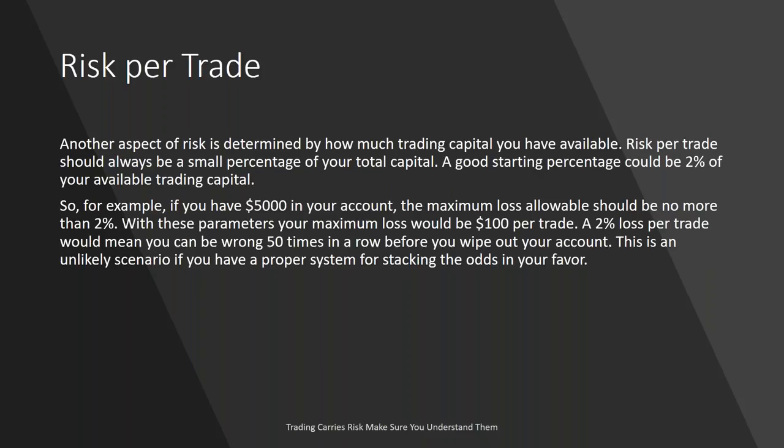There's a whole slew of order entry types — OCOs, one cancels the other. That means if you're not sure if an asset is going to go up or down, you can set up two orders, one above and one below the price, and tell the system it's an OCO order. If the price moves up, it'll buy and cancel your sell order. If the market falls down, it'll sell and cancel your buy order. Understanding the type of orders is crucially important, but also understanding your risk per trade.